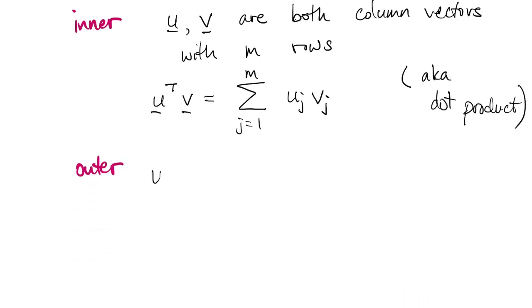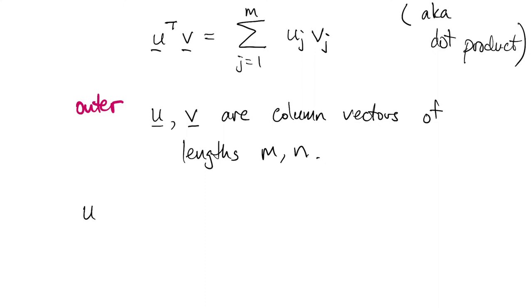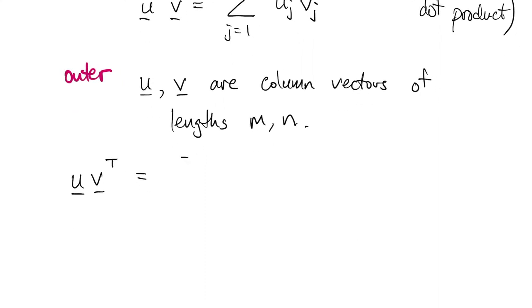Now the outer product is not the same thing as the cross product, by the way. In the outer product, you have column vectors possibly of two different lengths. Then the outer product is the matrix of all possible pairwise products. In other words, you take one element of u and one element of v, multiply them together, and you get a whole matrix of results, m by n.